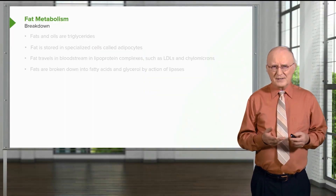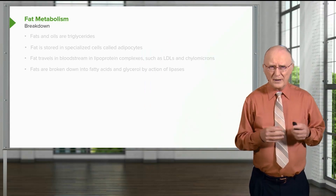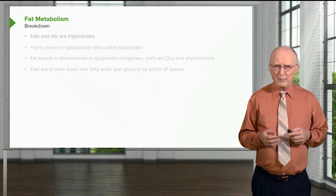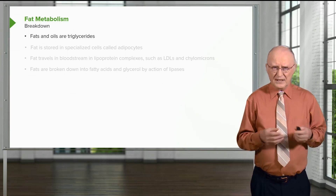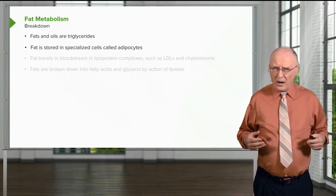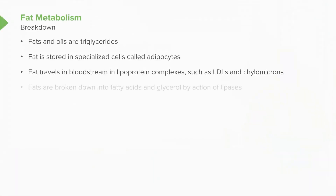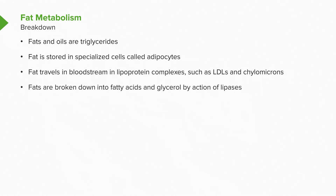Fat metabolism is something that all of us want to do if we're worried about how much we're carrying around. Fat breakdown: fats and oils are, as we've seen, triglycerides. Fat is stored in our body in specialized cells called adipocytes. Fat is important to travel in our bloodstream, but it's difficult because it's not water soluble, whereas our blood is mostly an aqueous solution. So to travel in the bloodstream, fat must go through complexes called lipoprotein complexes — you probably know them as LDLs and chylomicrons. Fats are broken down into fatty acids and glycerol, their constituent components, by the action of enzymes called lipases.